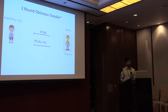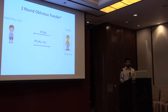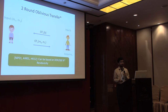We weaken the security requirement slightly: instead of requiring simulation-based security against a malicious sender, we just say that the sender cannot distinguish whether the receiver's bit b is 0 or not. For the rest of the talk, you can imagine this is standard two-round oblivious transfer. This primitive was constructed based on the assumptions DDH, LWE, and residuosity.